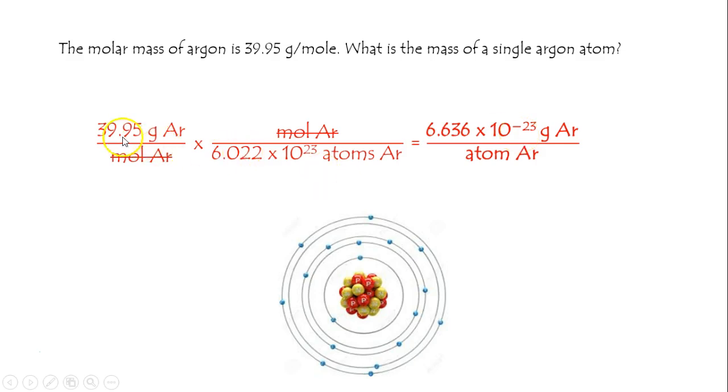You could also simply say 39.95 grams of argon is equivalent to 6.022 times 10 to the 23rd atoms. We could squish this down into one step to give you grams per atom, but this works fine too.